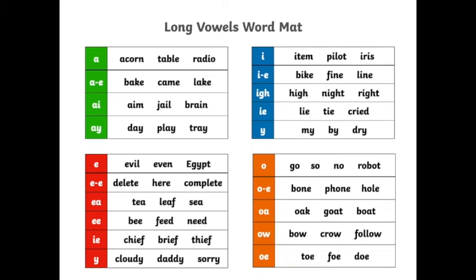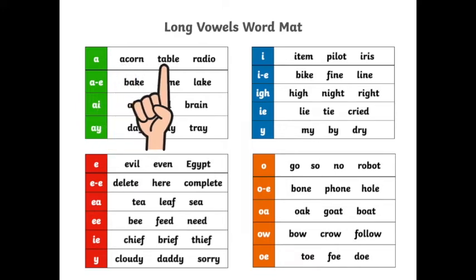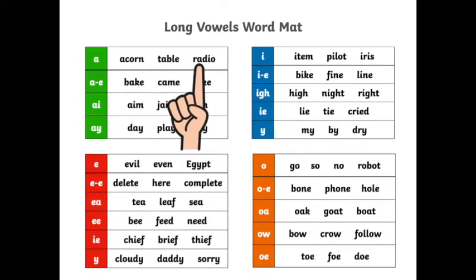So let's begin by reading some words which have long vowel A. Are you ready? A-K-or-U: Acorn. T-A-B-L: Table. R-A-D-E-O: Radio.